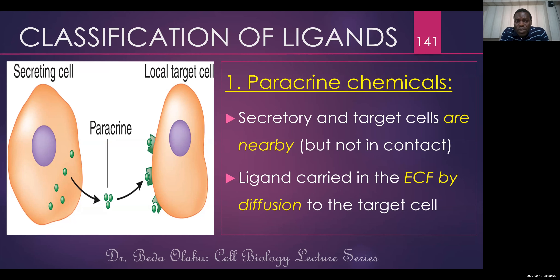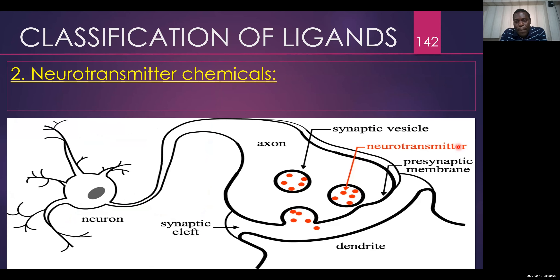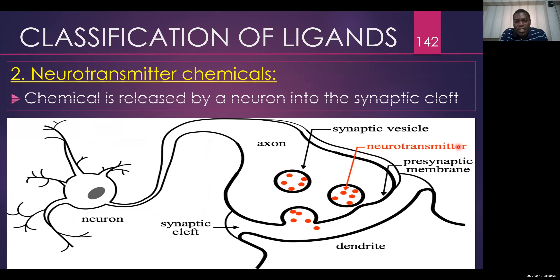You can also have what we call a neurotransmitter. You call it a neurotransmitter if that chemical is being released by a neuron and it is going to another neuron. If the secretory cell is a neuron and the target cell is also a neuron, then you call that chemical a neurotransmitter.